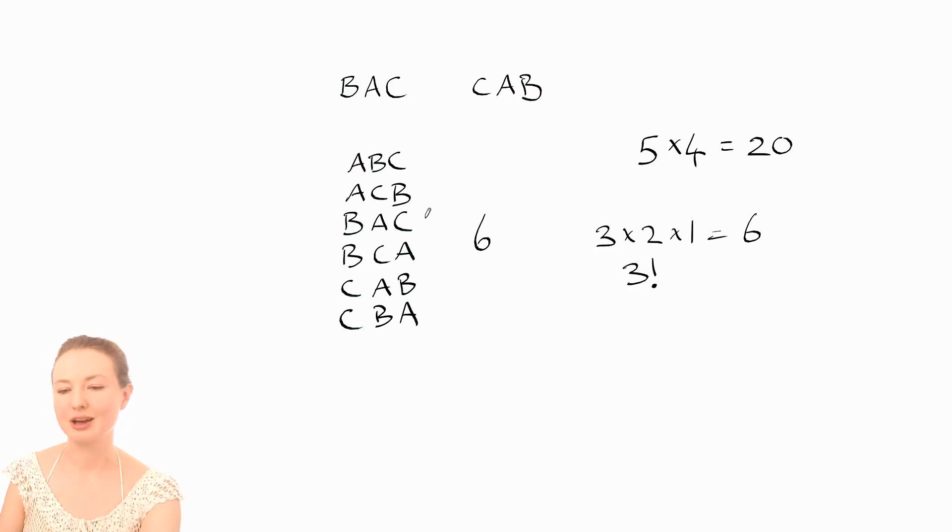Let's say for example judge one and two pick the ranking BAC. Now judge three, since judge three has to disagree with the other ones, he can't have BAC as his ranking - he has to have one of these five. So he's got five choices for what ranking he does. So these two judges have six choices and then the remaining judge has five choices, so we can multiply those together to work out the total number of possibilities.